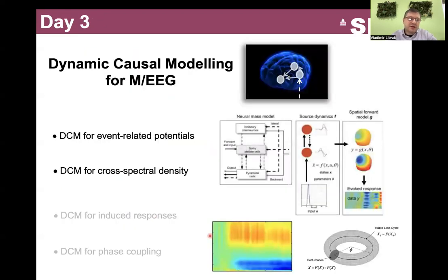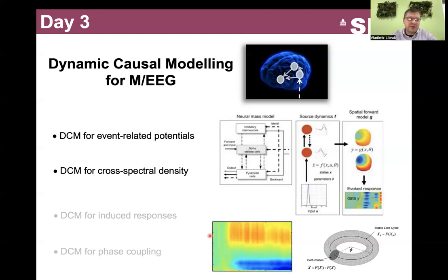The third day will be dedicated to DCM, or dynamic causal modeling. DCM is a further extension of the Bayesian inference idea we'll discuss in the context of source reconstruction. The models used are more sophisticated — physically realistic neural mass models that can generate signals like evoked responses or realistic power and cross-spectra for steady-state data. We may also mention the more historical, simpler variants of DCM: DCM for induced responses and DCM for phase coupling.